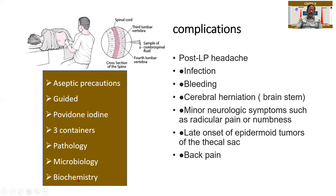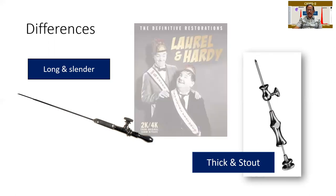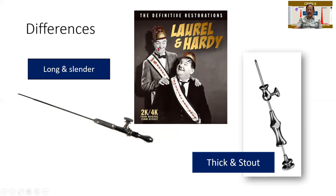These are the preparations we should have before doing a lumbar puncture. What are the differences between the needles? One is thin, long, and slender — in fact you can bend it because it passes through soft tissue; this is the lumbar puncture needle. Whereas another needle is thick, short, and stout — this is a bone marrow aspiration needle. Students generally mix up both. To remember: Laurel for lumbar puncture — he is tall, lean, and thin; and Hardy is short and stout. Please remember these two.